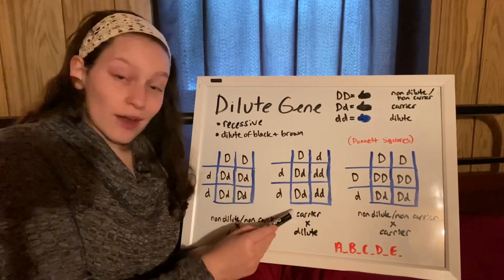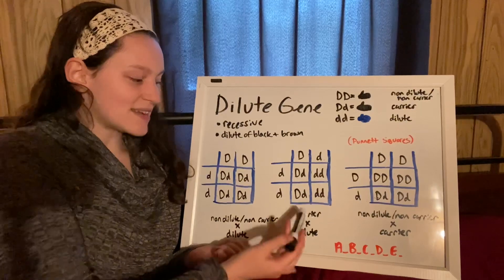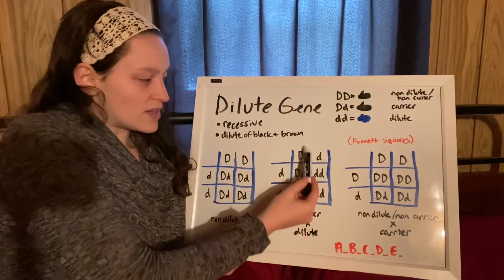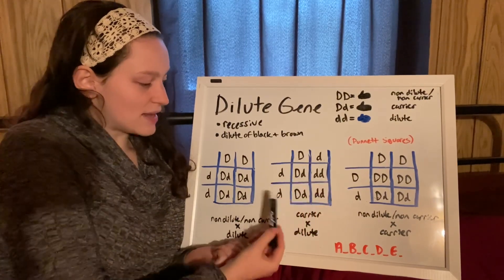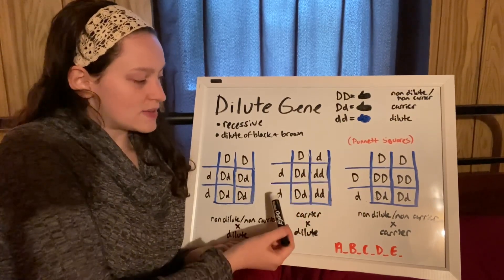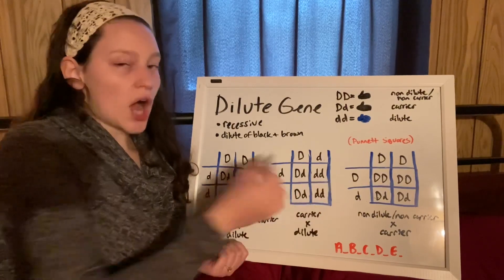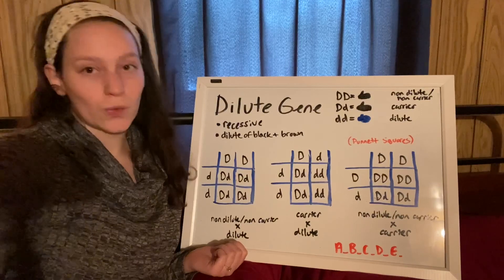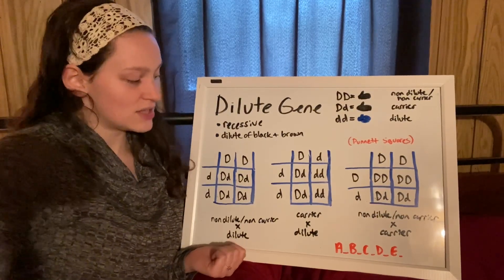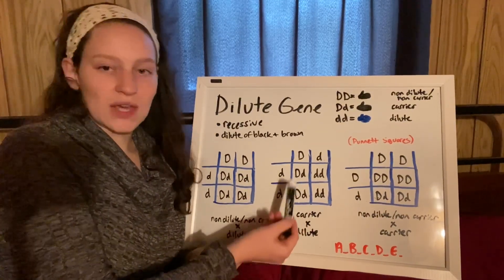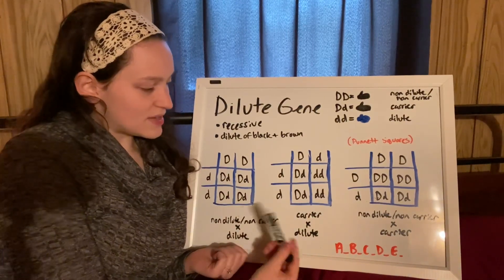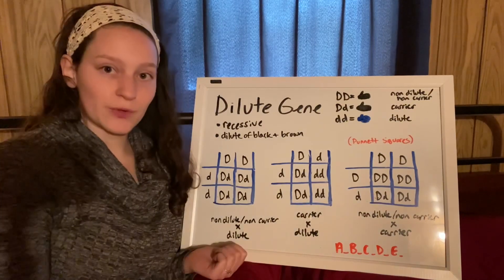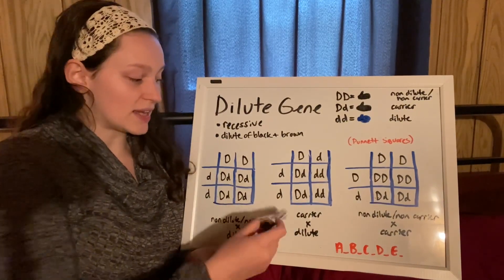Over here, we've got a carrier and a dilute. This is an ideal crossing if you're trying to get some dilutes. The carrier has one capital, one lowercase, and then the dilute has the two lowercase. In this crossing, you're going to get approximately 50% dilutes and 50% carriers of dilute who are not dilute. So these would be, say, blacks who carry blue. This is a decent crossing to do, because if you're trying to get blues or lilacs, you need a carrier to do so.